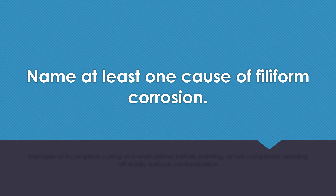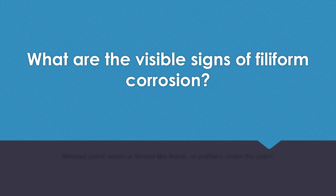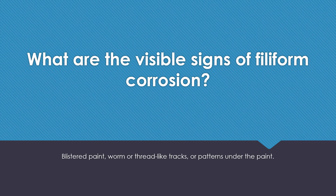Name at least one cause of filiform corrosion. Improper or incomplete curing of a wash primer before painting, or not completely washing off the acidic surface contamination. What are the visible signs of filiform corrosion? Blistered paint, worm or thread-like tracks, or patterns under the paint.